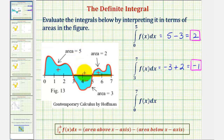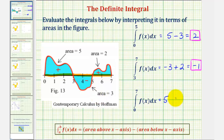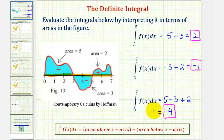Finally, for the last integral, we have the definite integral of f(x) from zero to seven, over the entire interval. From zero to three, the value would be positive five because the area is above the x-axis. From three to five, the value would be negative three because the area is below the x-axis, so we subtract three. From five to seven, the area is above the x-axis, so the value is positive two. We have five minus three plus two, which equals positive four. I hope you found this helpful.